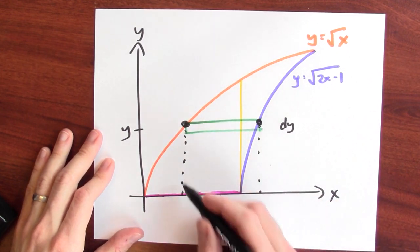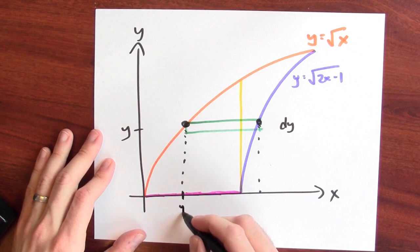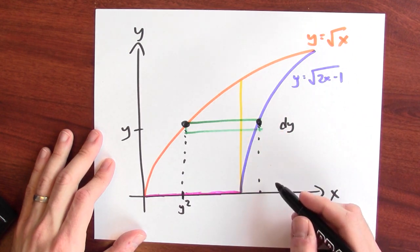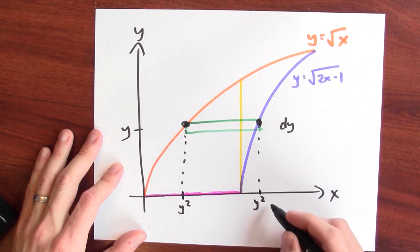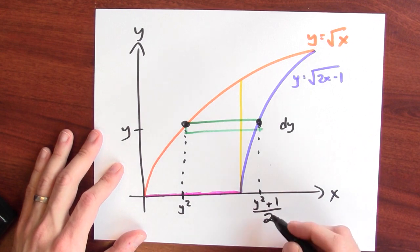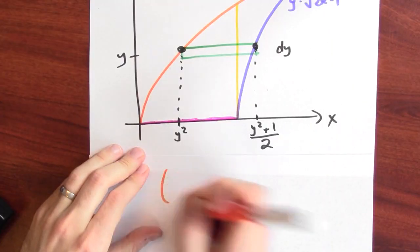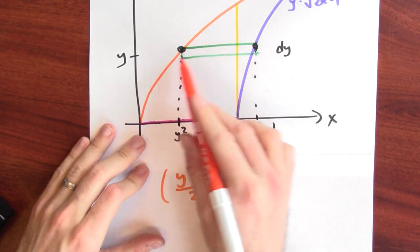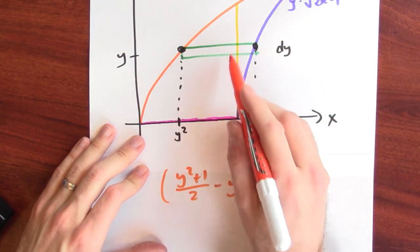Well, I should figure out what this point is and where this point is. If this is y, I can solve this equation and find out that in that case x is y squared. And I can similarly solve this equation and find out that if this point has a y coordinate y, the x coordinate will be y squared plus 1 over 2. And that tells me the width of this green rectangle. It's this minus this. I'm going to write down the area of that green rectangle. So the width is y squared plus 1 over 2 minus y squared. That's how wide this rectangle is. And the height of that rectangle is dy. So this product is the area of that green rectangle.